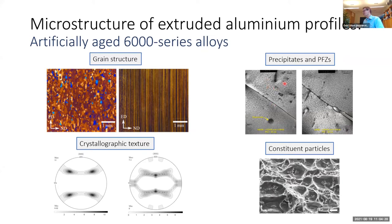Moving into the grains, we find hardening precipitates — needle-formed particles of nanometer size, visible here as black spots. Around the grain boundaries we have precipitate-free zones, which are soft zones without precipitates. These zones can be quite important for ductility in some cases and can be around 100 nanometers, sometimes up to 1000 nanometers.